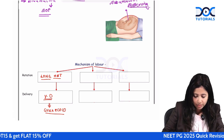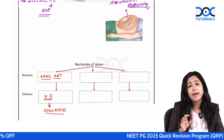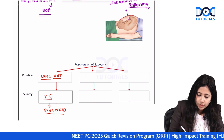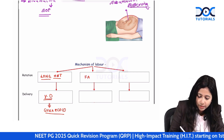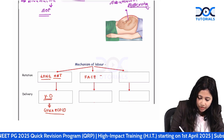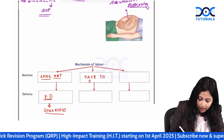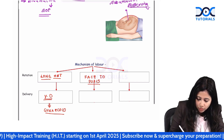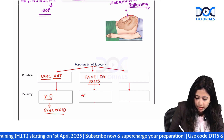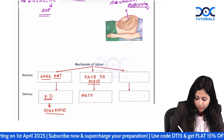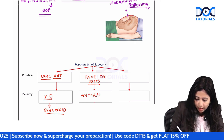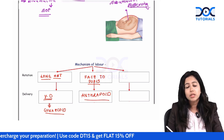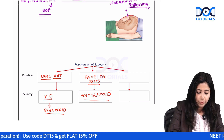Next, you have the short posterior rotation and babies can even deliver as face-to-pubes delivery. Face-to-pubes delivery is associated with anthropoid type of pelvis — this is a one-liner you need to know. Which pelvis gives face-to-pubes delivery? Anthropoid type of pelvis.